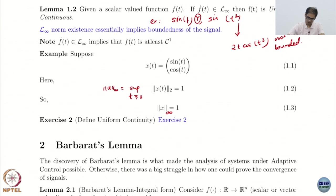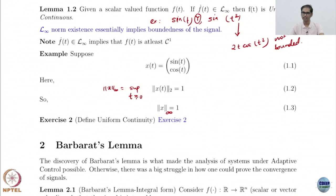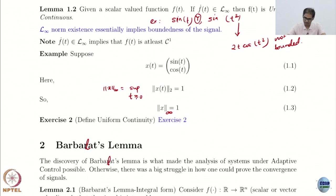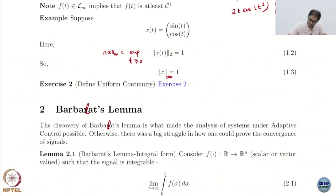I have also given you an exercise to define uniform continuity and give the epsilon-delta definition, not some arbitrary definition. Now, unfortunately throughout these notes this is written incorrectly — it is Barbalat's Lemma, not Barbarat's Lemma. There is no rat involved here.